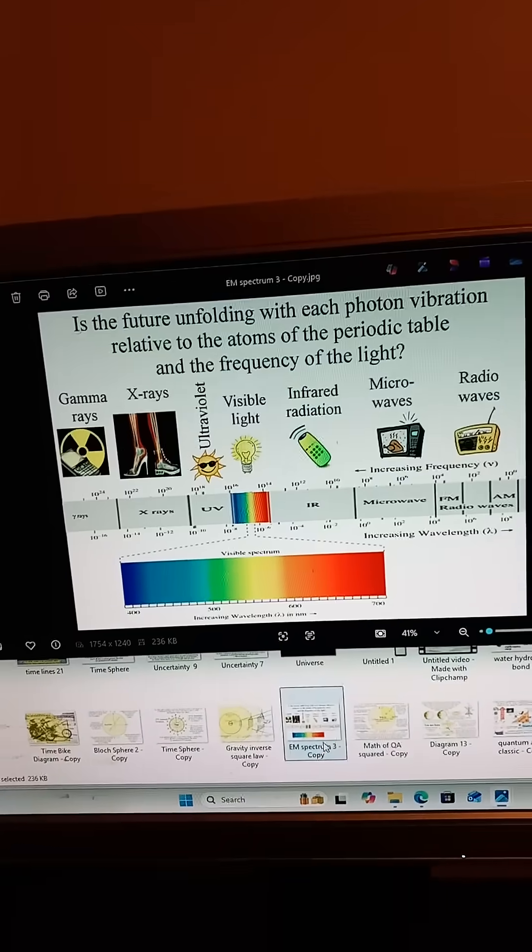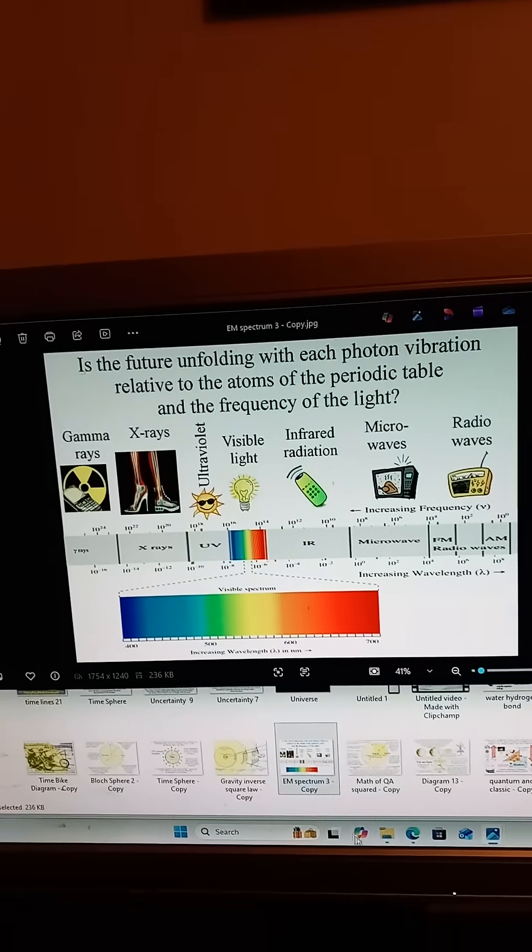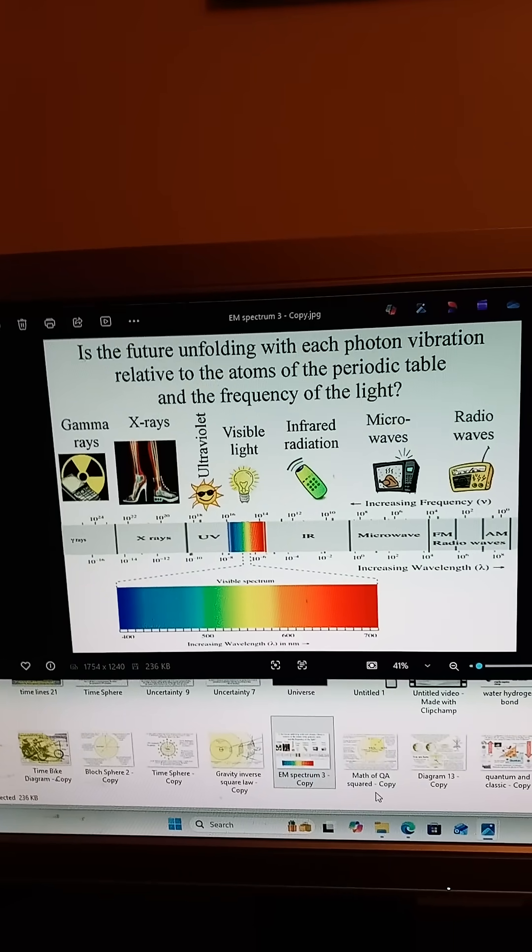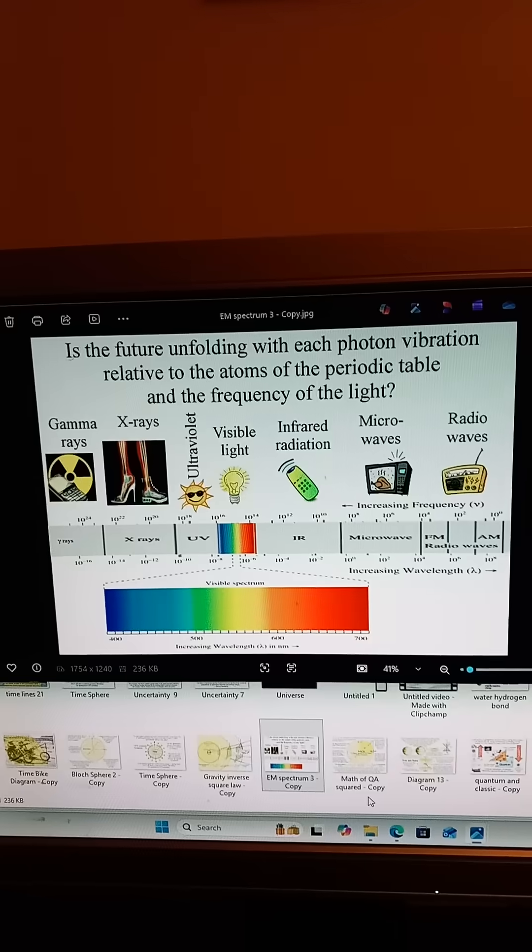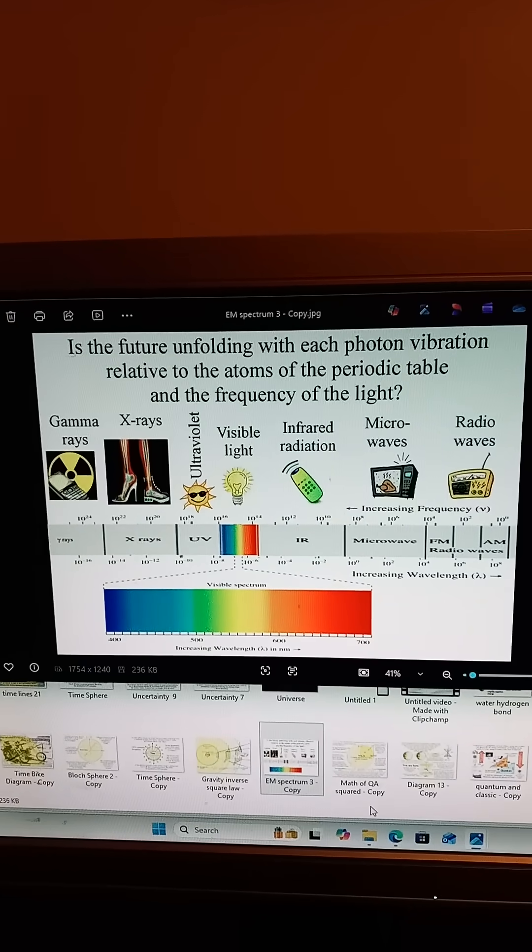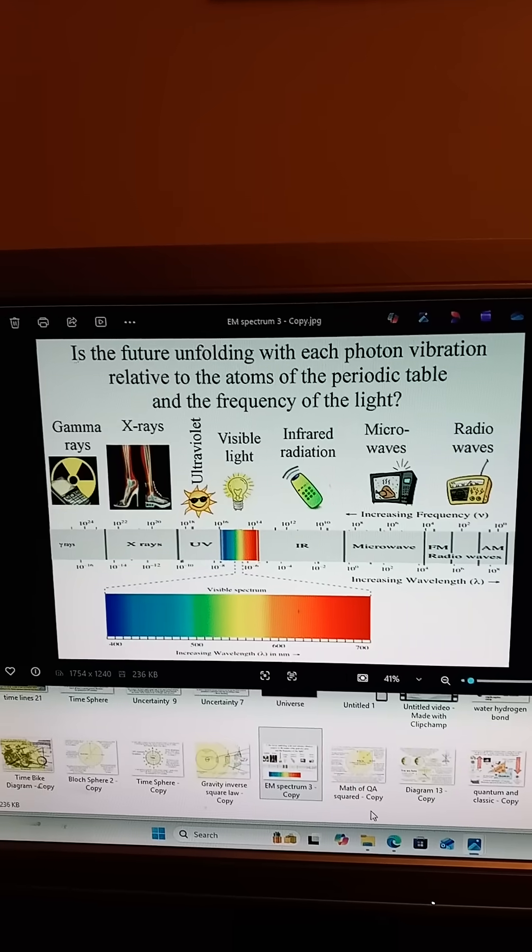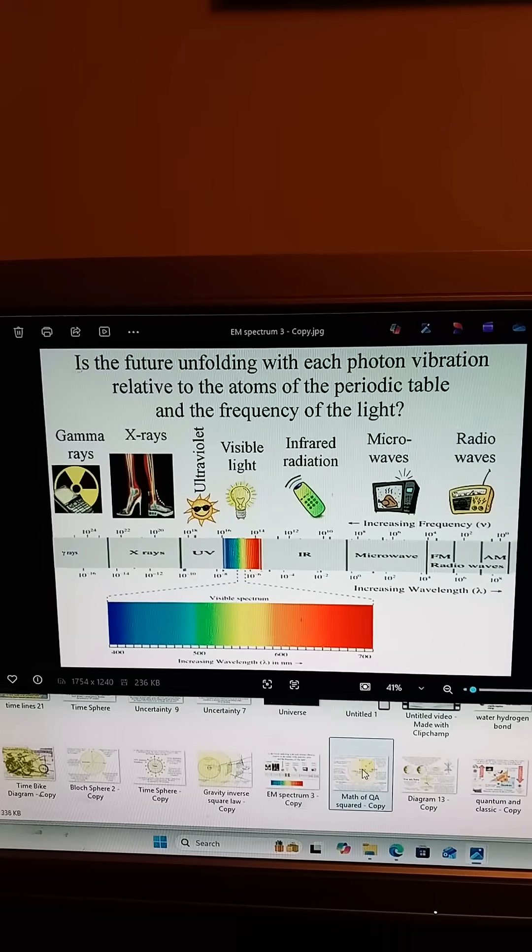Gravity emerges in a similar way. Every object shapes the surrounding phase geometry through spherical wave interactions. When two objects are near each other, their phase structures overlap. Phase gradients form, and the system naturally evolves toward balance. Objects fall not because they are pulled, but because phase geometry smooths itself.